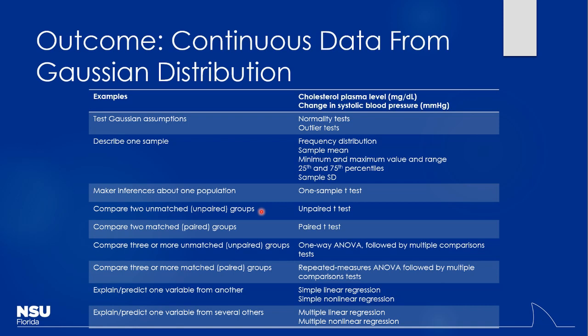Understand whether you'd use a paired or unpaired test based on the description of the study. If using a pre- and post-design where you measure people before the study starts and then again after an intervention — that's paired, because you're using the same people. Those are the most common cases for a paired test: a pre-post design, or running the sample in tandem like the oral and rectal temperature example.